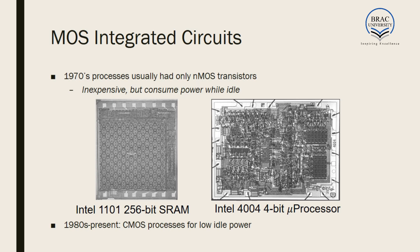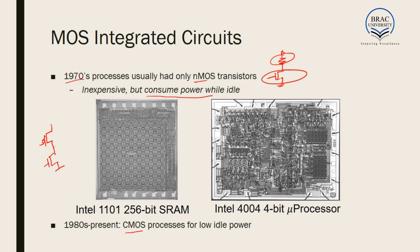MOSFET is regularly used in our VLSI industry. In the 1970s the technology contained only NMOS transistors — some resistive elements and an NMOS network with a resistive network. This was an inexpensive and easy technology but the problem was it consumed a lot of power even when idle, that is even when the circuit didn't do anything. So from the 1980s we developed CMOS processes — complementary MOS. In CMOS there is a pull-up network containing PMOS and a pull-down network containing NMOS. Since it contains both PMOS and NMOS, which are complementary, it is called complementary MOS or CMOS. In CMOS process idle power is very low, and as a result from the 1980s till now the CMOS process is prevalent.